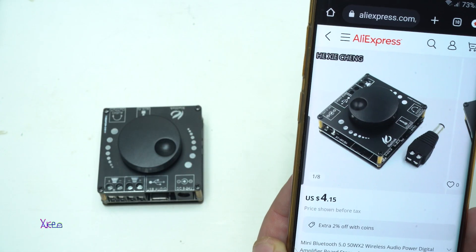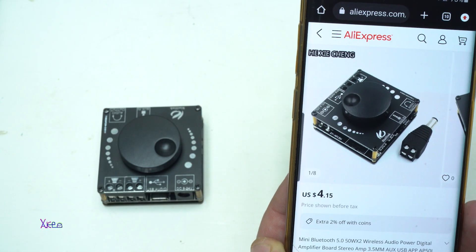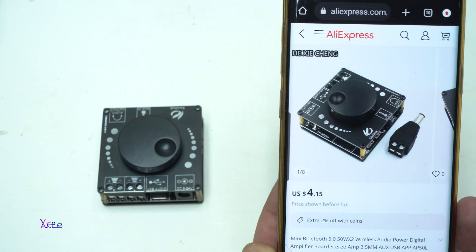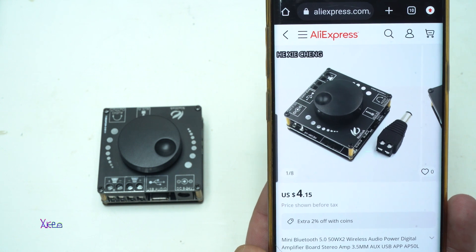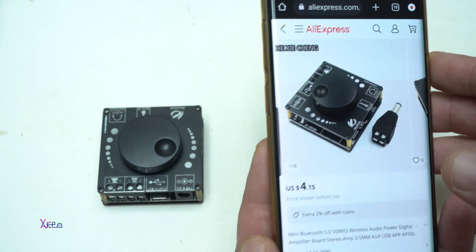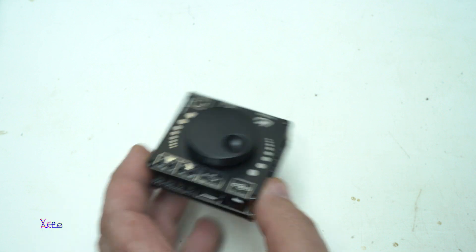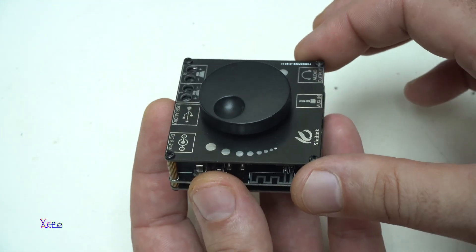This one is maybe the cheapest audio amplifier stereo, two times by 50 watts. You can get it from AliExpress for around $4 plus shipping. Let me show you close up. It has many functions.